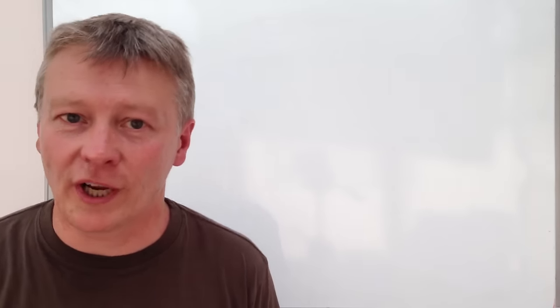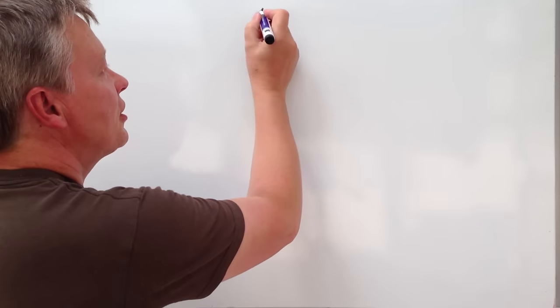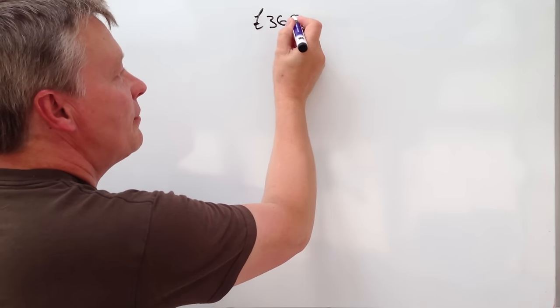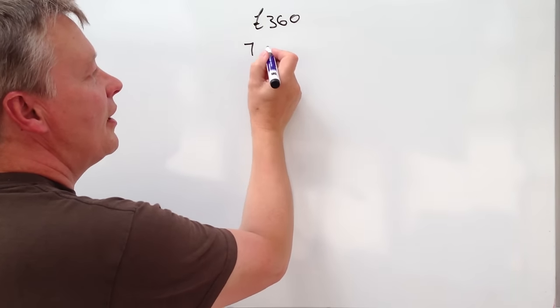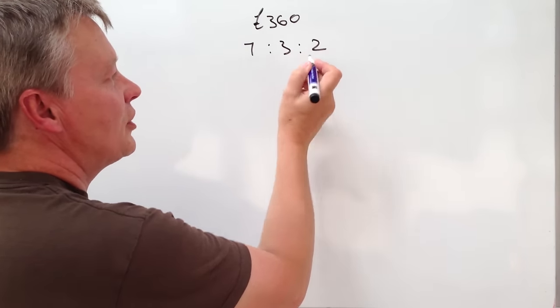Usually they fall on the same sort of lines where you're asked to share an amount amongst two or three people. This particular question looks at sharing £360 and it's in the ratio of 7 to 3 to 2.